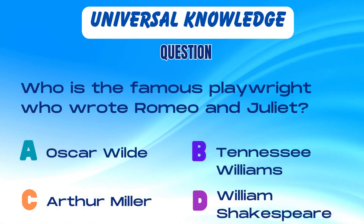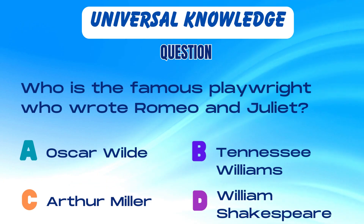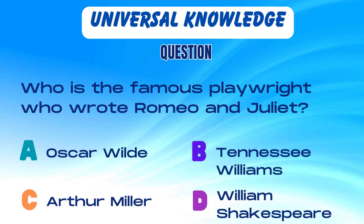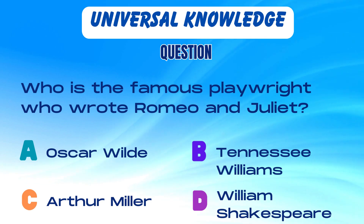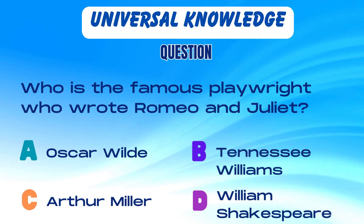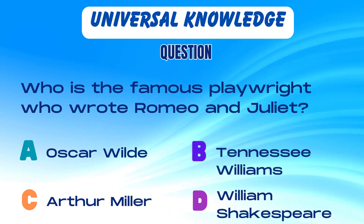Who is the famous playwright who wrote Romeo and Juliet? Is it A. Oscar Wilde, B. Tennessee Williams, C. Arthur Miller, or D. William Shakespeare?